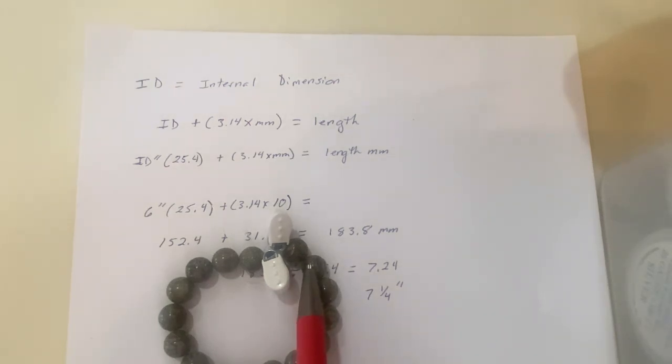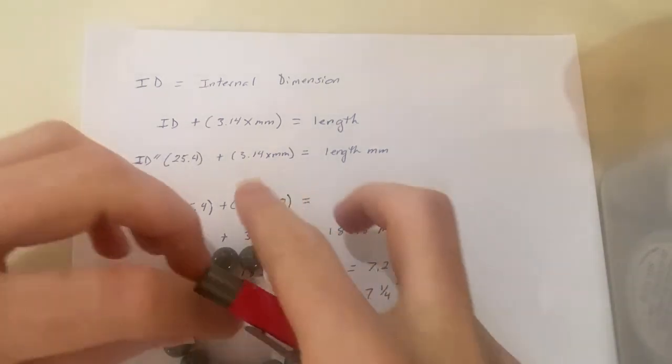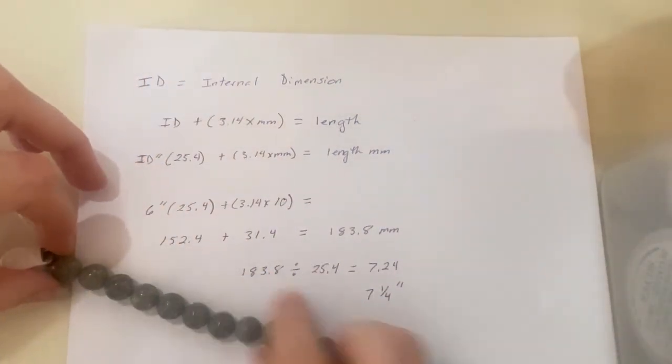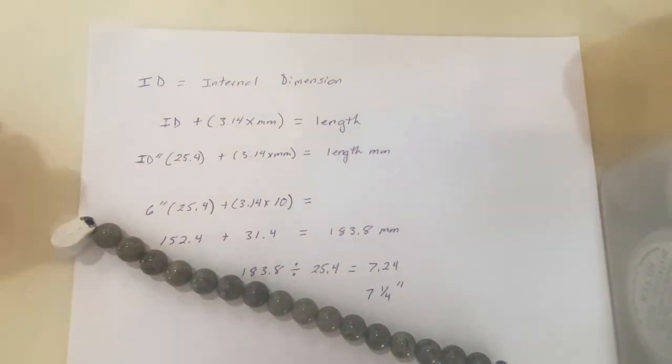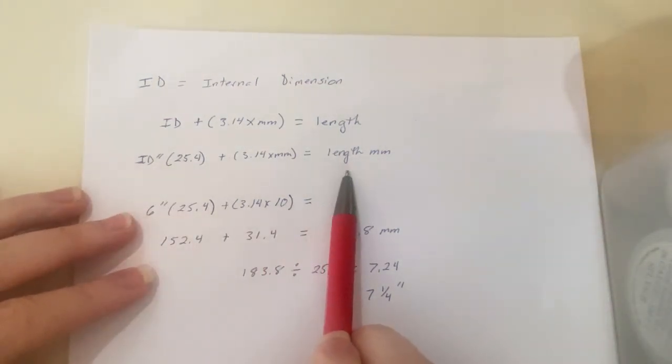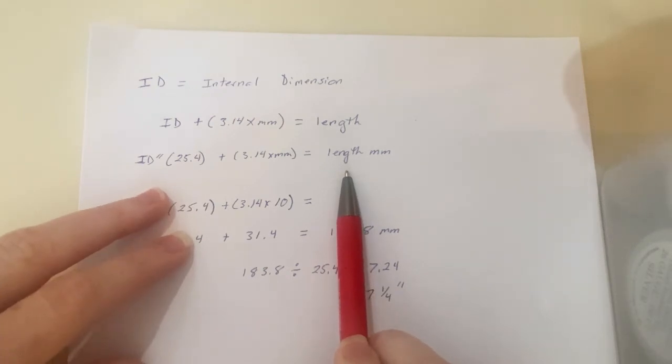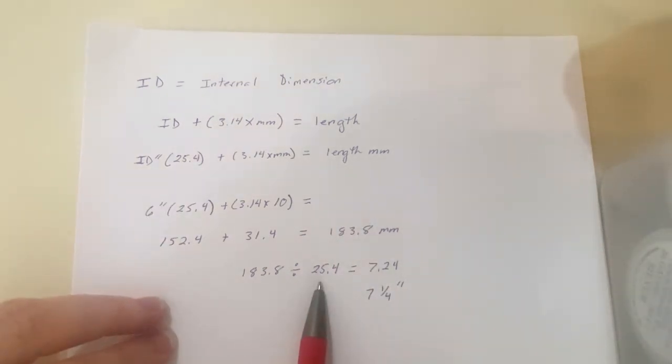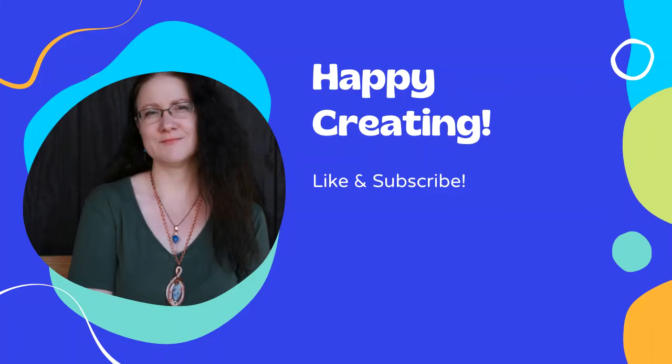This was a six and a half inch strand if you remember, and what it comes out to be—I measured this—it comes out to be five and a quarter. So the thicker your bead, the larger your bead, the more it's going to eat up. Go ahead, copy this formula down, and then don't forget to divide by the millimeters to convert it back to inches. I hope that helps. Happy creating, have a wonderful day.